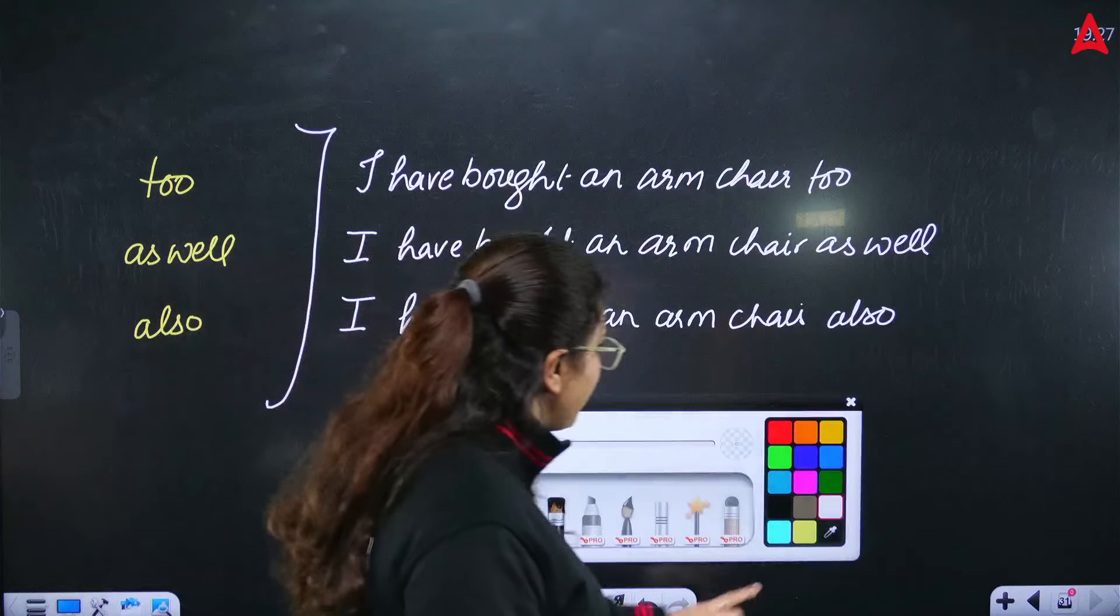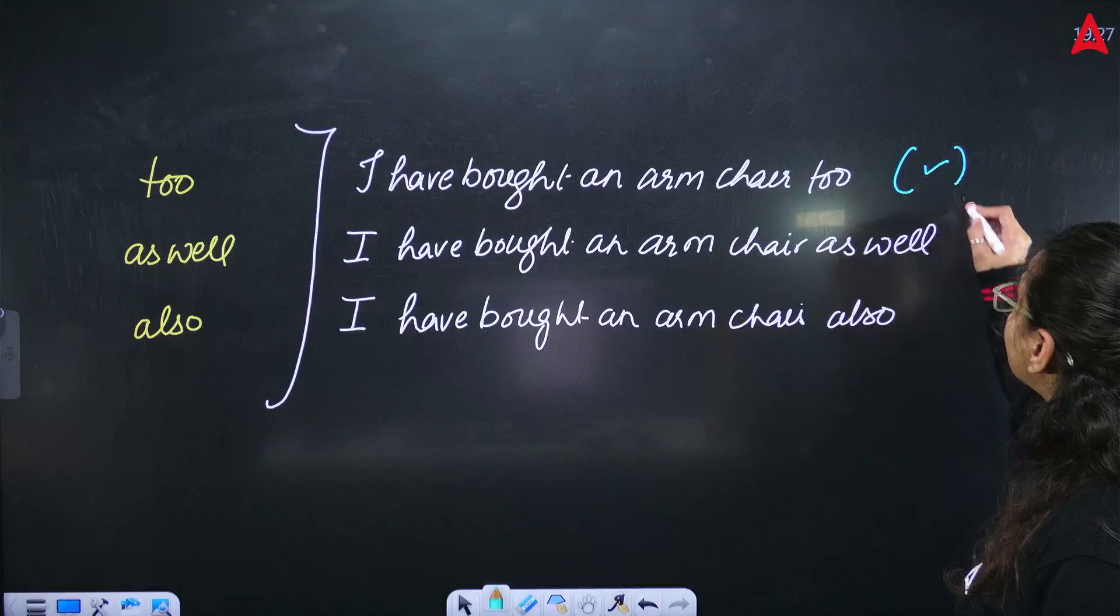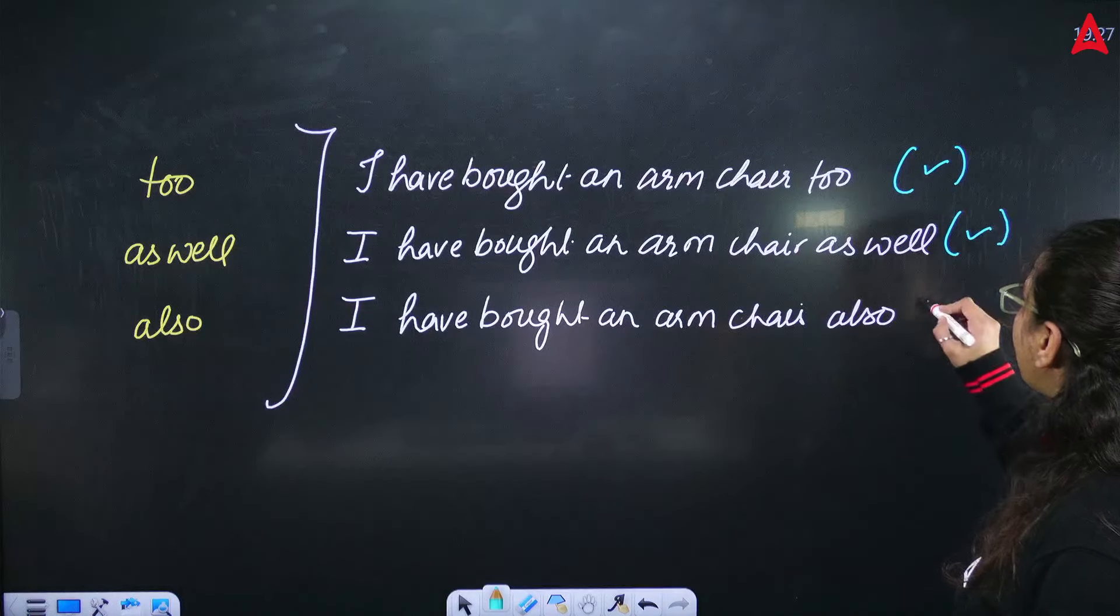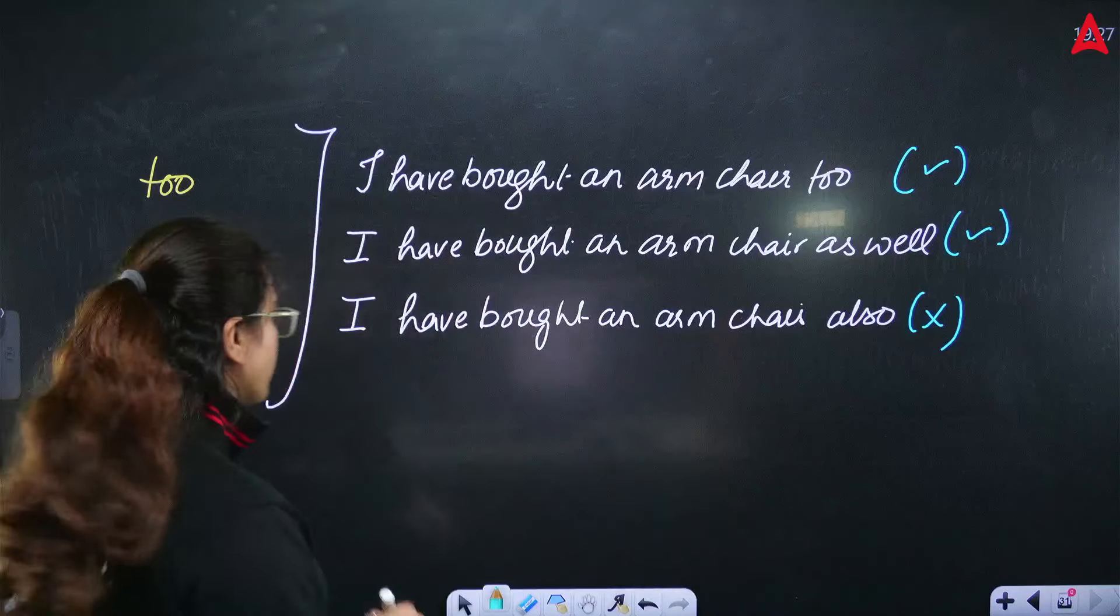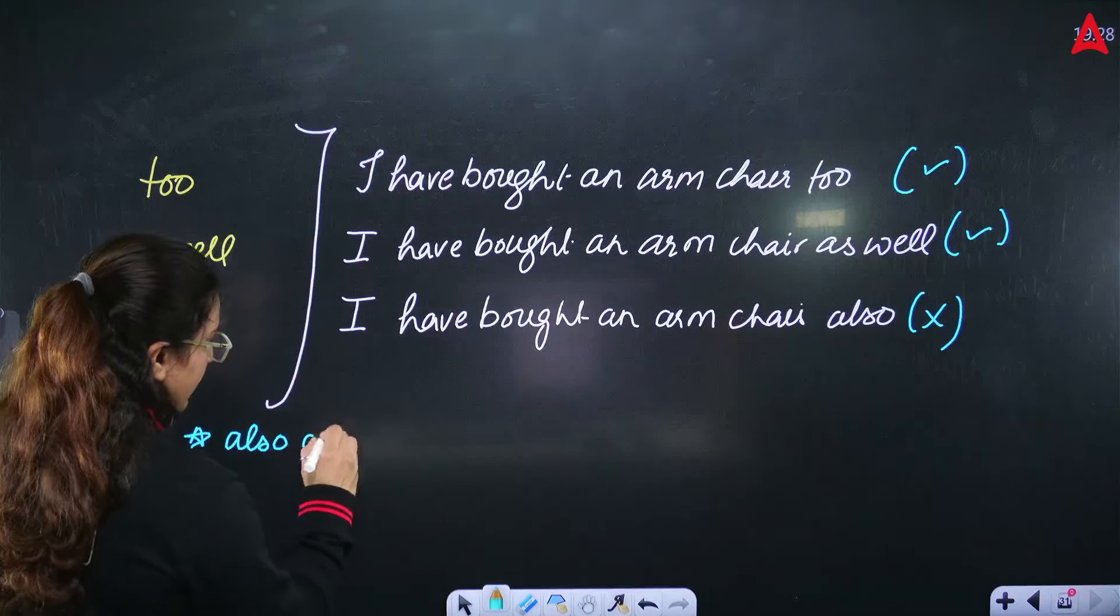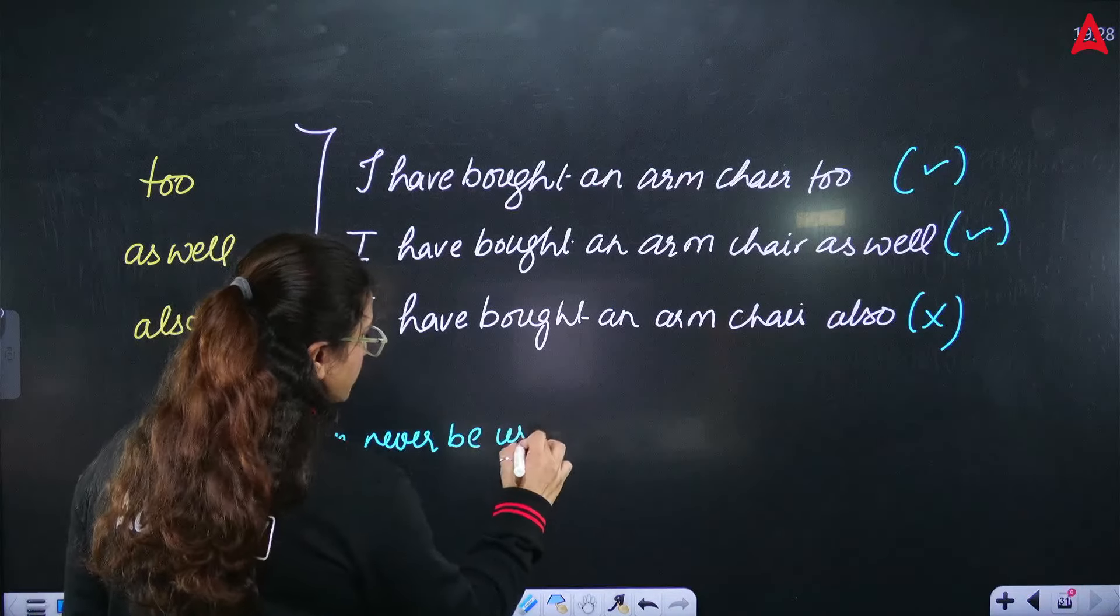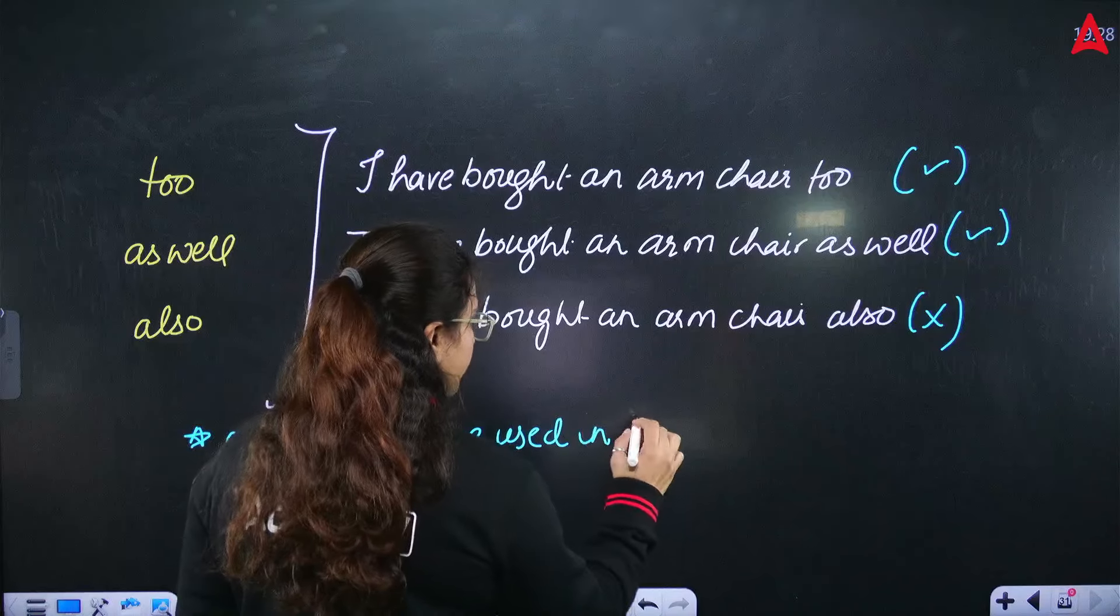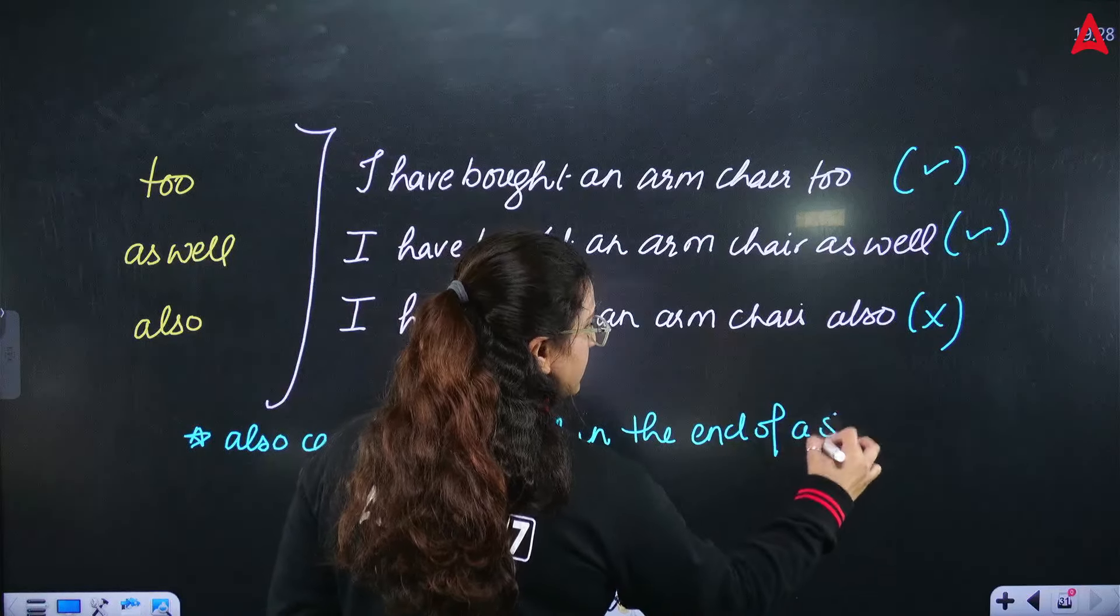Ultimately, you have three meanings. But if I say in three sentences, this sentence is right. But what is the sentence? Wrong. Wrong. The reason behind it is that also can never be used in the end of a sentence.